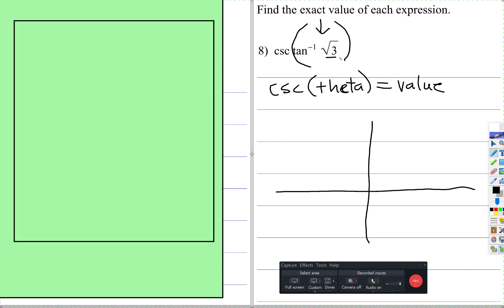So tangent is opposite over adjacent. And here's just a little tip, on these it'll probably be the unit circle ideas, the unit circle values. So let's think about this. We know that at π/4, cotangent is 1.